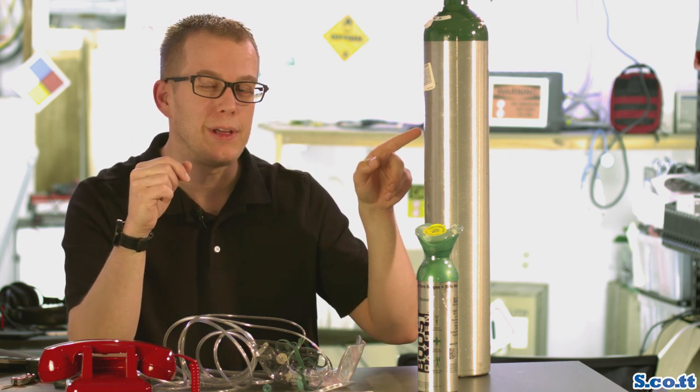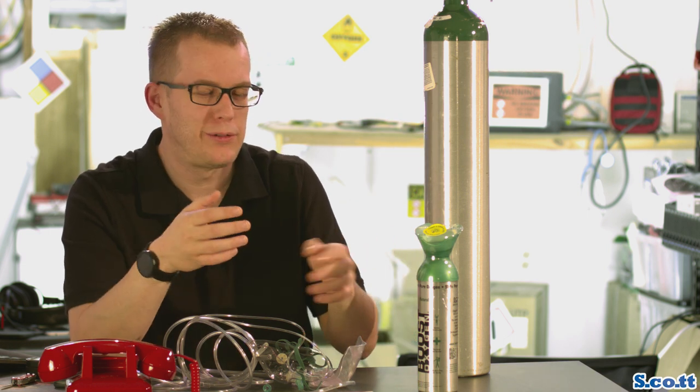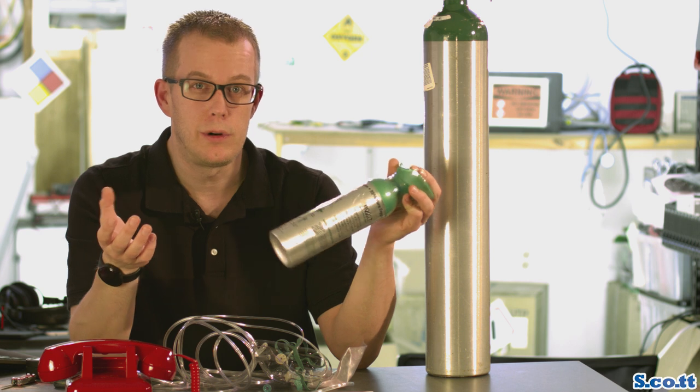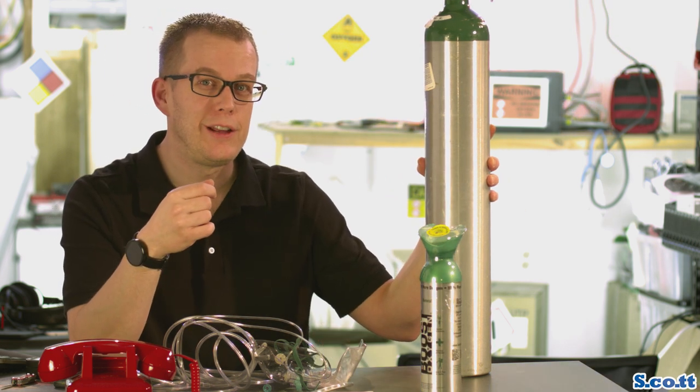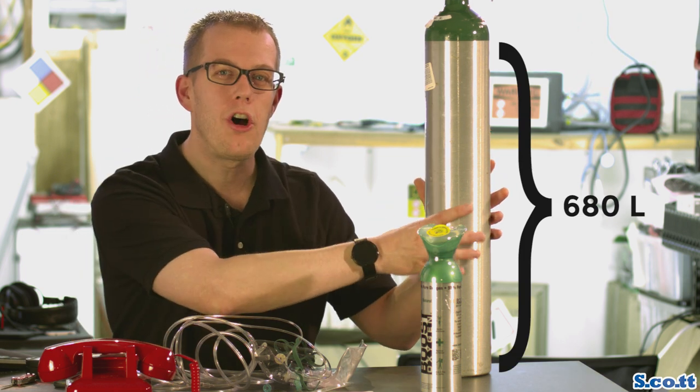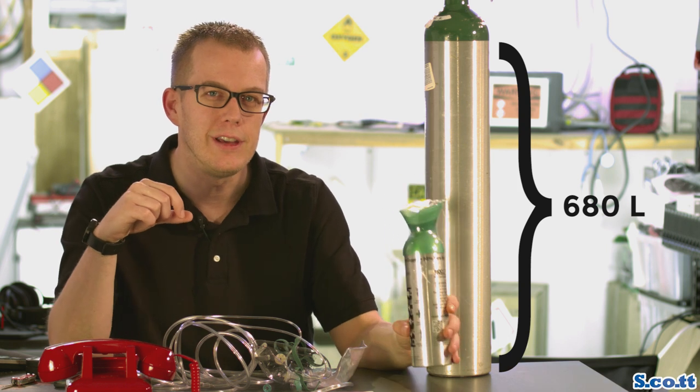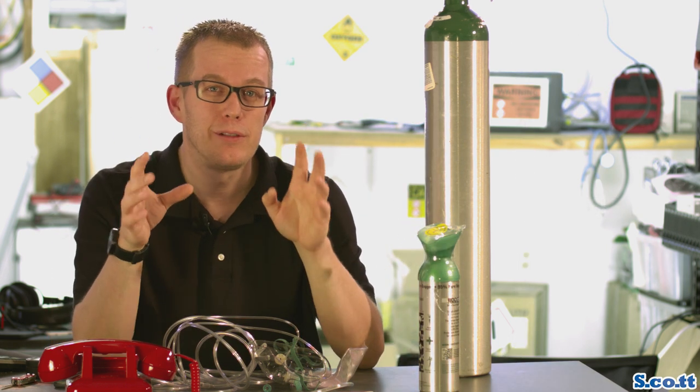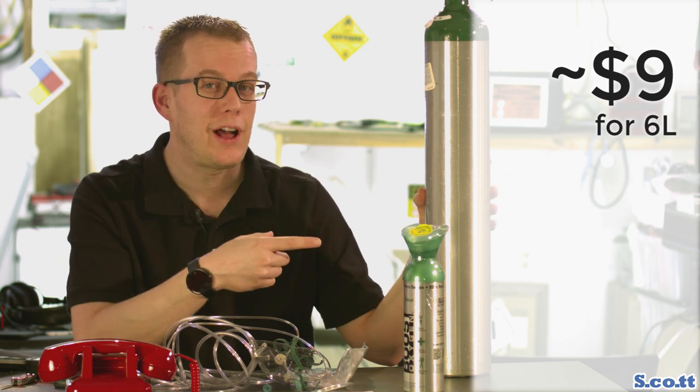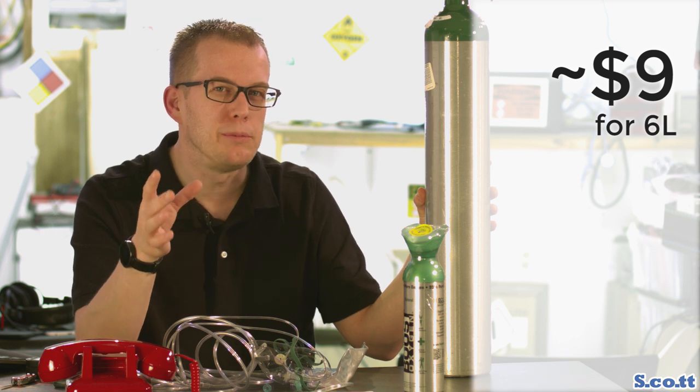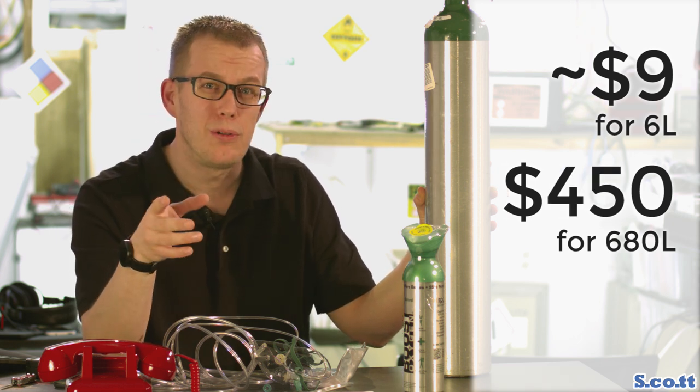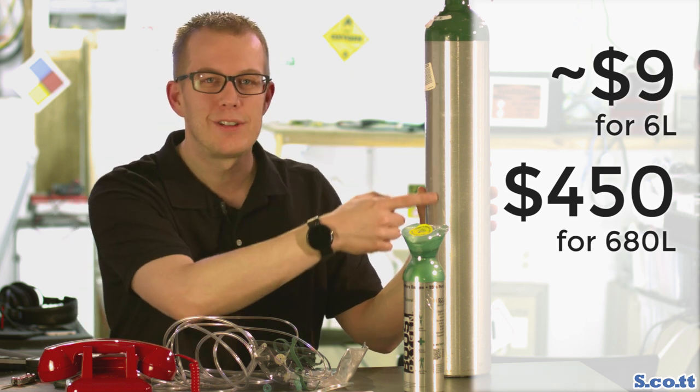How much more oxygen is in this tank than this little can? Well, this looks significantly bigger, right? I mean maybe it's five or ten times as big. Well, this is compressed to 2000 PSI, whereas this, well they don't say what it's compressed to. You could calculate it because this apparently contains six liters of oxygen. Sounds like a lot, right? I mean six liters of water is a lot of water, so it seems fairly efficient. Well, this canister right here contains nearly 700 liters of oxygen. It's actually a bit less but just for round numbers, 700 liters in this compared to six liters in this.